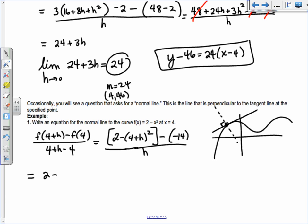I get 2 minus, keep it in parentheses because you're subtracting this entire product. Do not say 16 + h². So 16 + 8h + h², and then minus negative 14, so really plus 14, all over h.